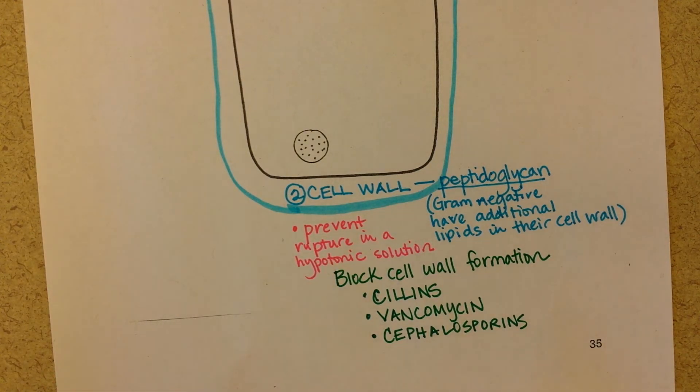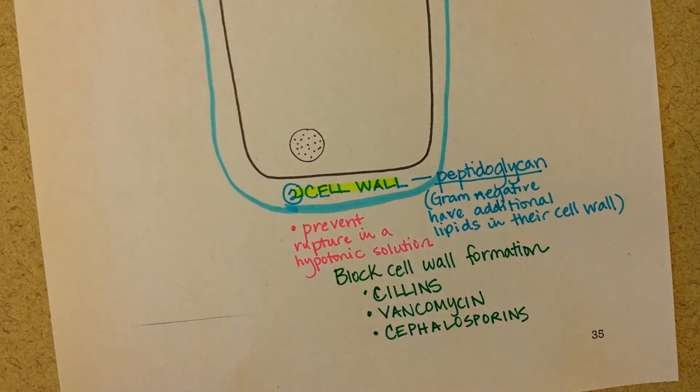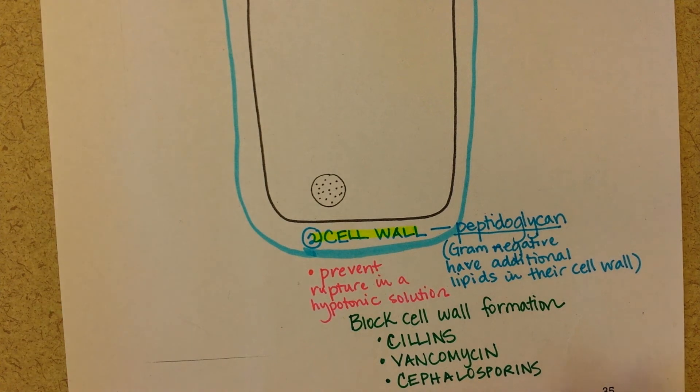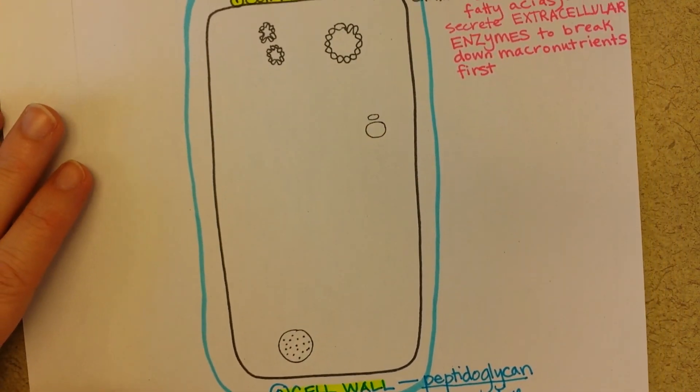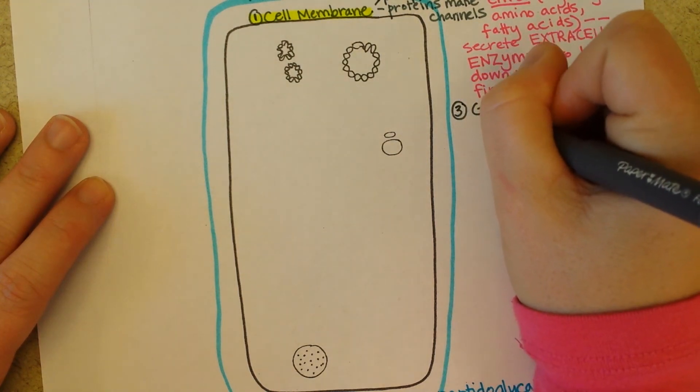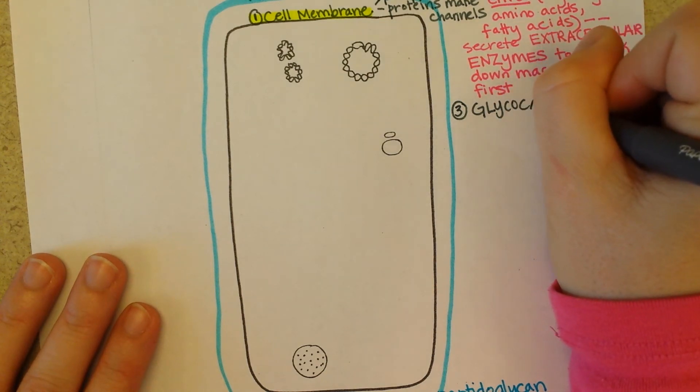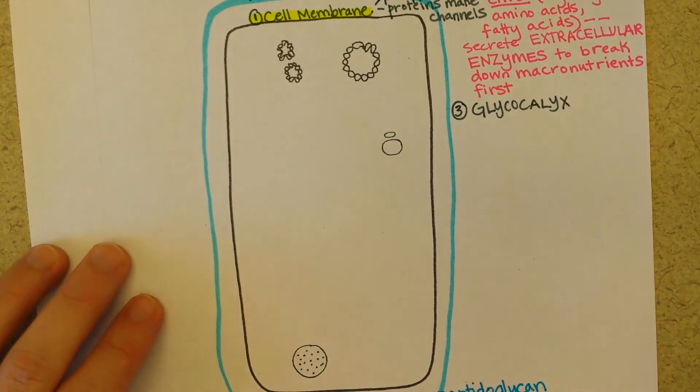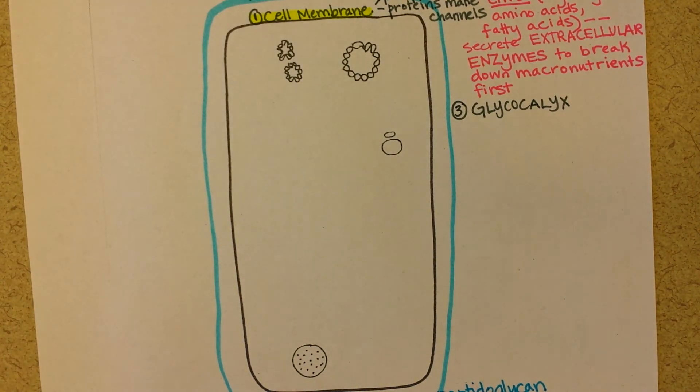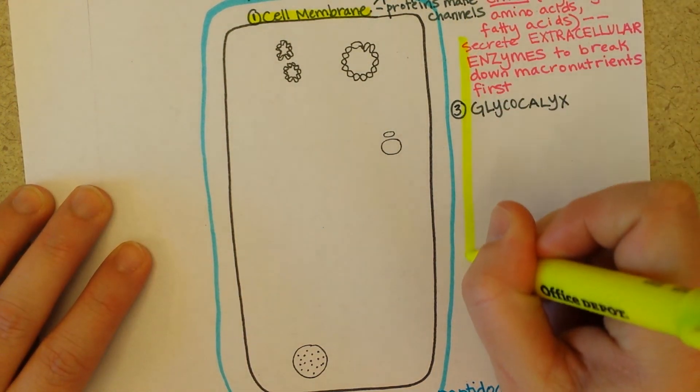Okay, so that was structure number two, the cell wall. Ready for structure number three. Let's see, what will I do next? Oh, the glycocalyx. So, number three, I'm going to write about it right here. So, this kind of looks like more cell wall once you see me draw it. I'm going to use a yellow highlighter, just like we put the blue outline. Now, do a yellow outline all the way around.